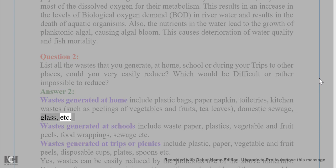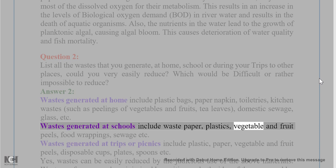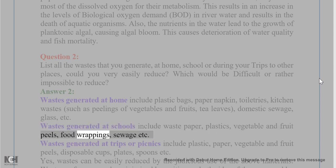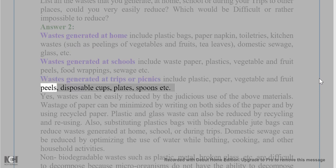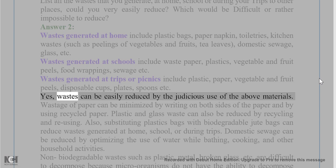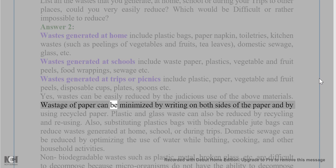Wastes generated at school and during trips or picnics include plastic, paper, vegetable and fruit peels, and disposable cups, plates, and spoons. Yes, wastes can be easily reduced by the judicious use of these materials. Wastage of paper can be minimized by writing on both sides of the paper and by using recycled paper.